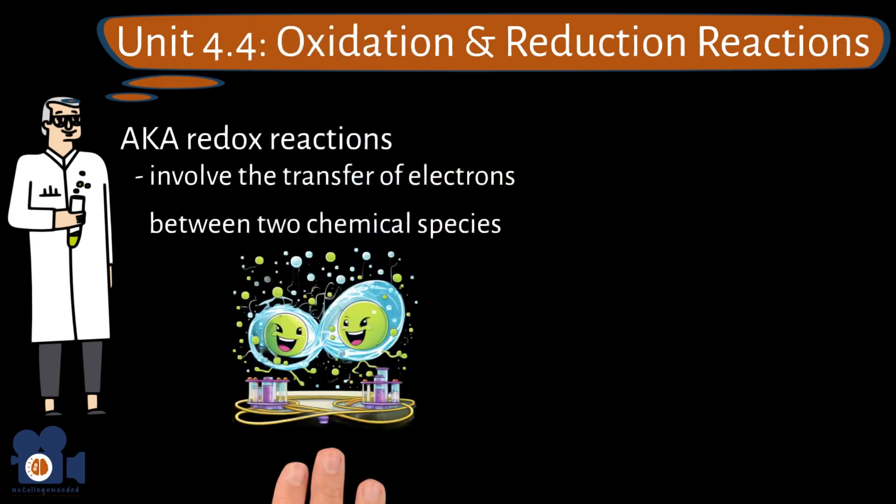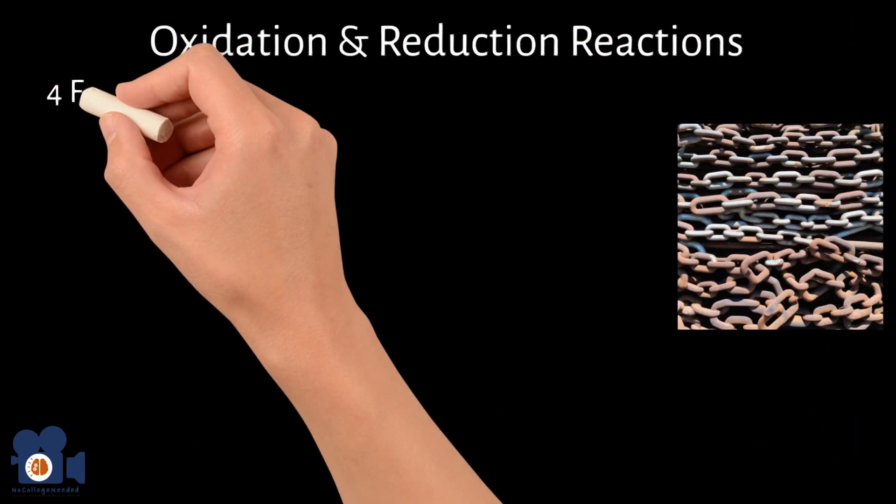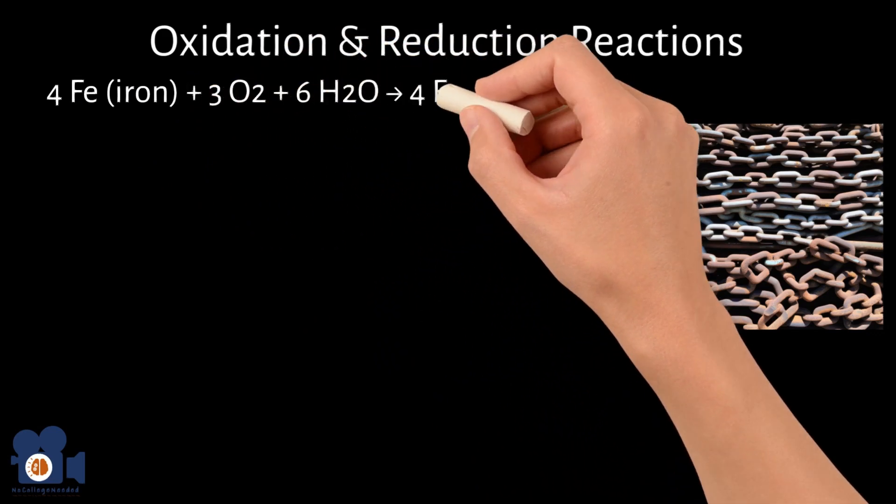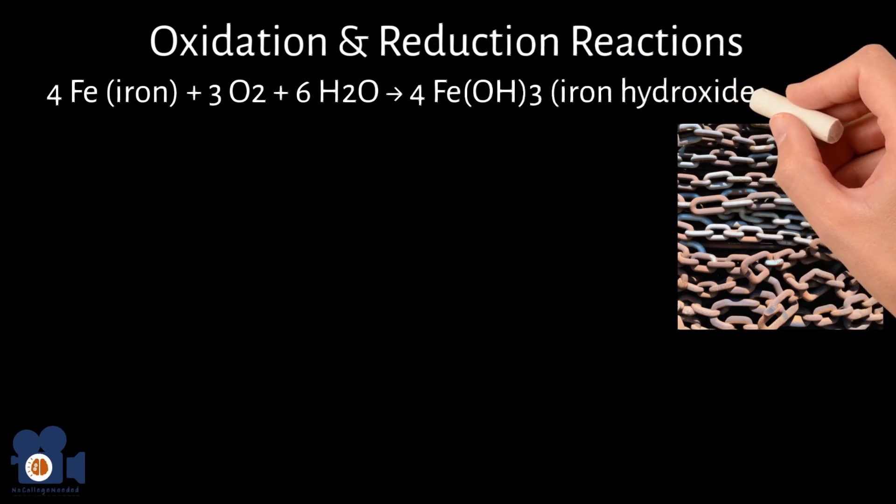By far the most familiar redox reaction is the corrosion of metal, also known as rusting. The specific reaction is 4Fe iron plus 3O2 oxygen plus 6H2O water going to 4Fe(OH)3 iron hydroxide, also known as rust.